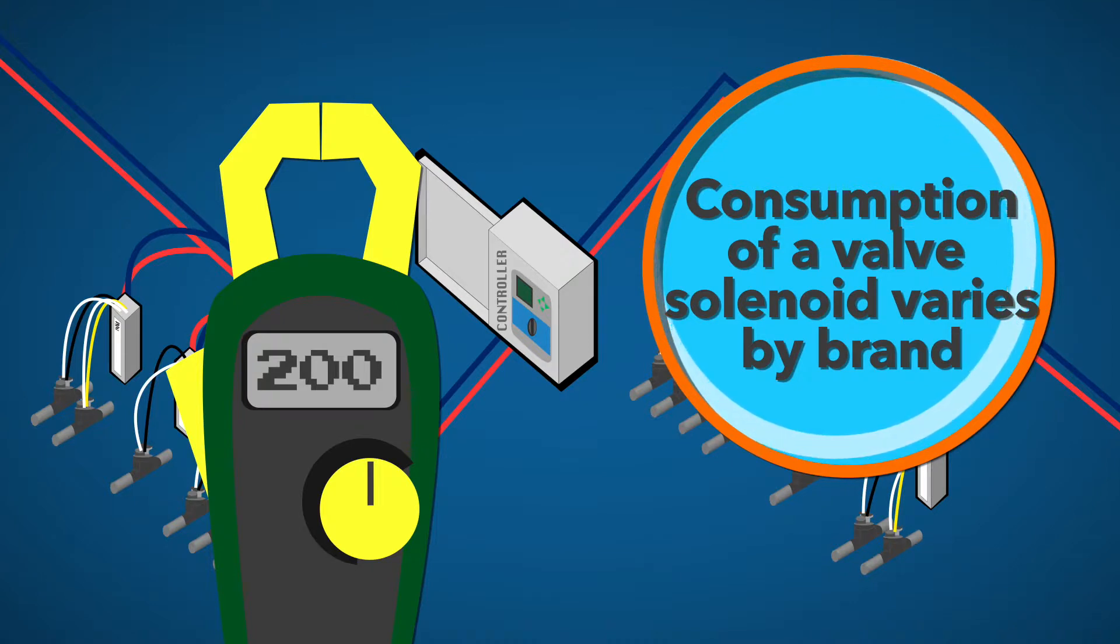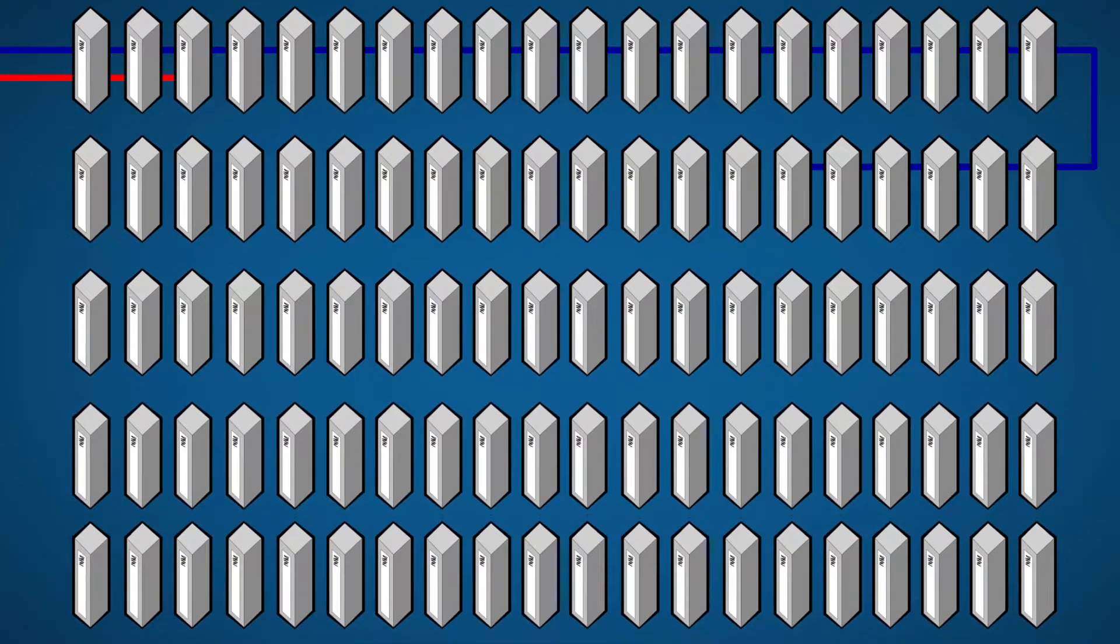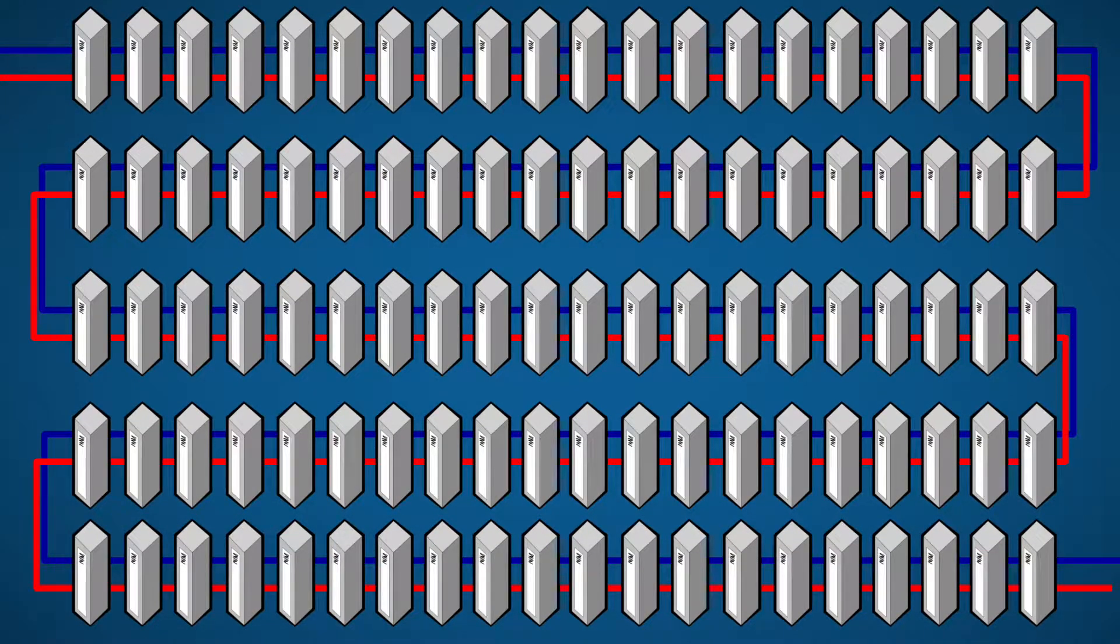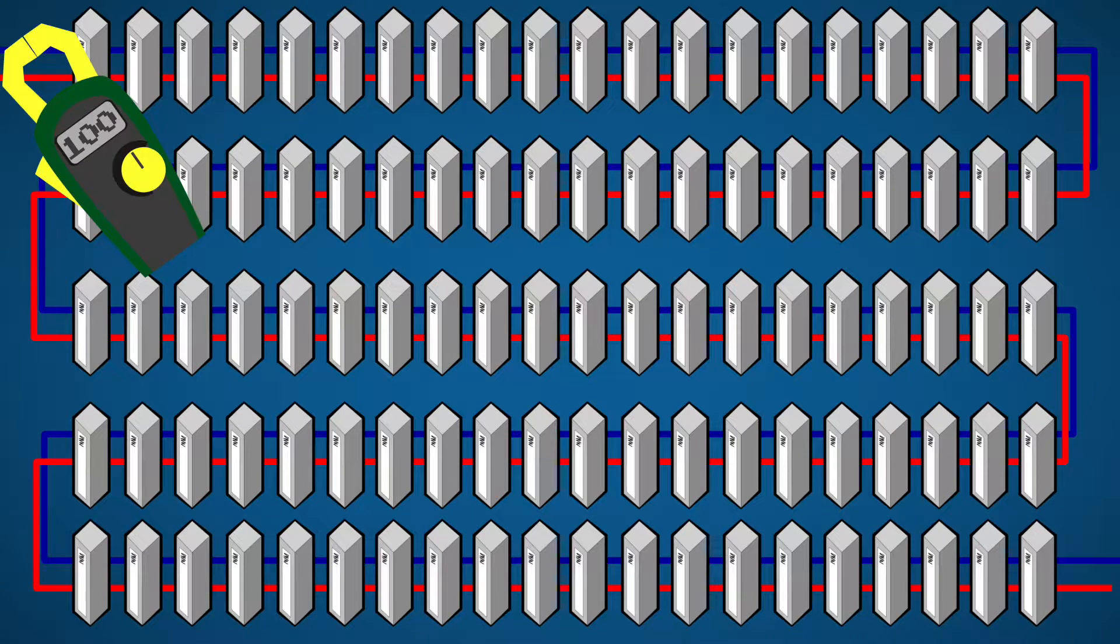Assuming you're taking mA readings with no solenoids activated, you'll see that it's easy to calculate what they should be at each step in the path. On our system with 100 decoders of 1 mA each, the reading at the start is 100 mA.